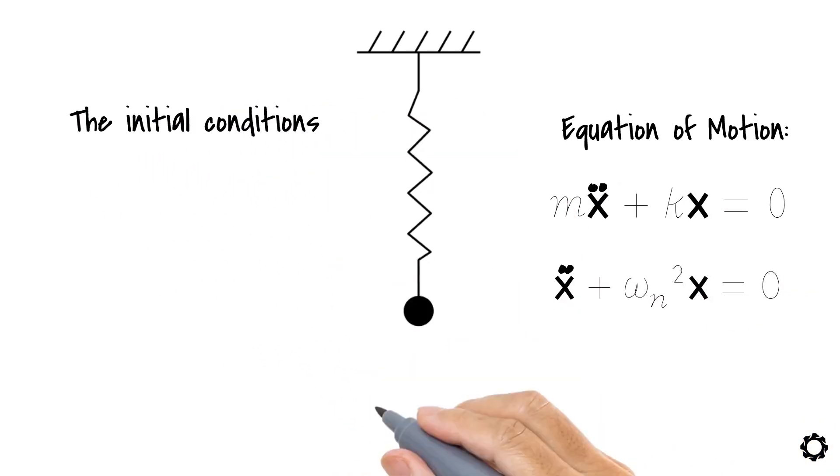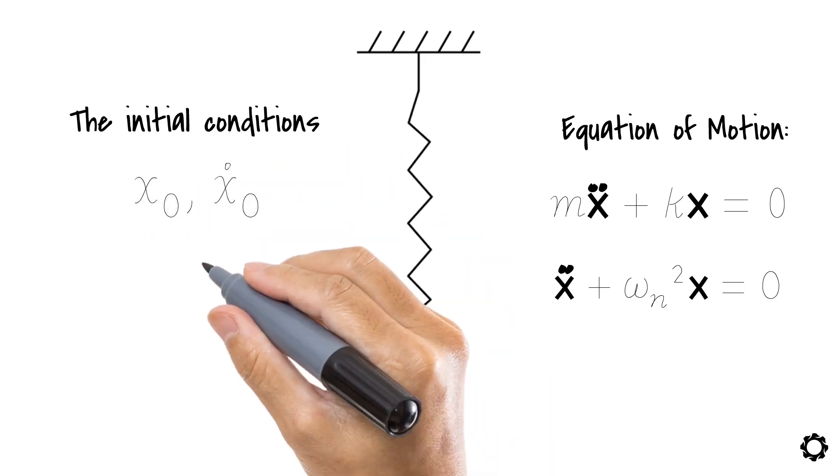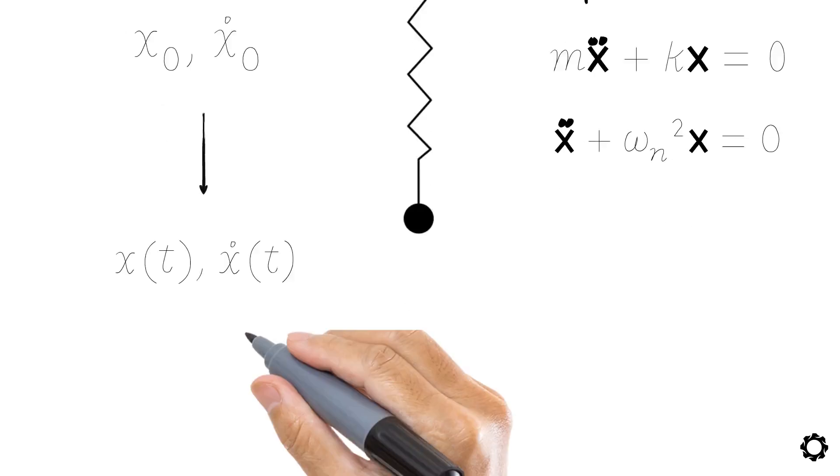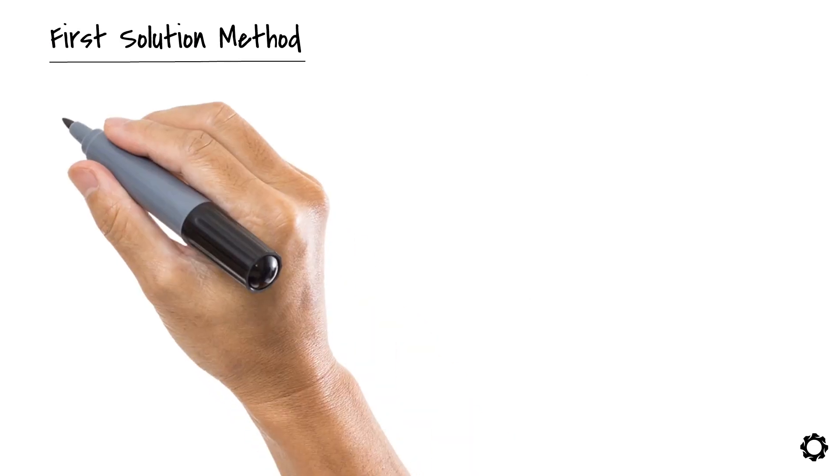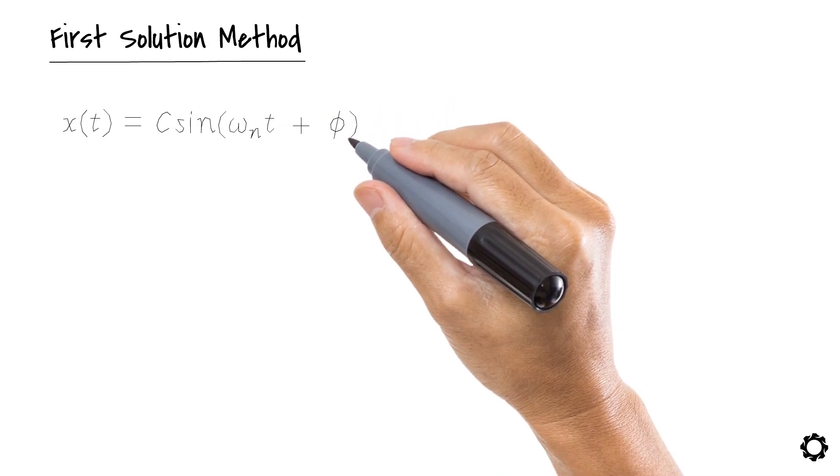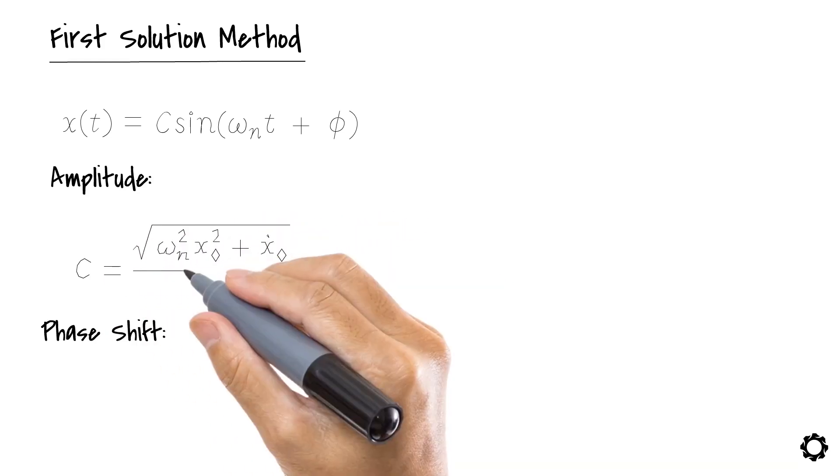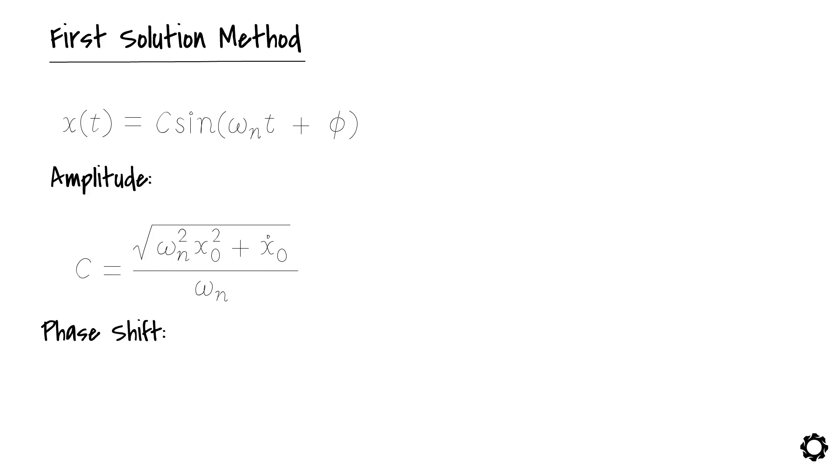If we know the initial conditions of the system, position and velocity, we could solve this equation to get the location and velocity of the mass at any time t. There are two alternative methods to reach the same solution for the equation. Let's focus first on the first solution method. In this one, we write the equation solution as xt equals c times sin omega n times t plus phi. And then we determine the amplitude and phase shift of the vibrating mass from their corresponding equations. Amplitude c equals square root of omega n squared times x zero squared plus x dot zero divided by omega n. Phase shift phi equals tan inverse omega n times x zero divided by x dot zero.